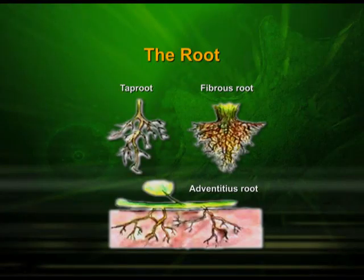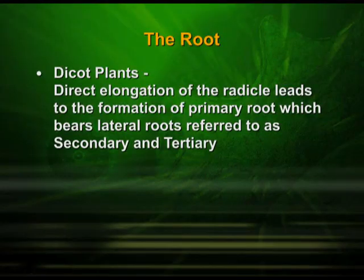The root is actually the direct elongation of the radicle, which leads to the formation of the primary root. In dicot plants, the root is the direct elongation of the radicle, which leads to the formation of the primary root, which bears lateral roots referred to as secondary and tertiary roots.